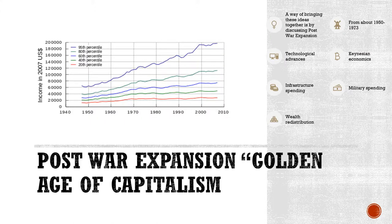While Keynesian economists believed there would be a downturn directly after the war, something called post-war expansion actually happened between about 1950 and 1973 — also called the golden age of capitalism — in which people of all income levels started to see their wealth and income grow. A lot of reasons for this include not just infrastructure spending, wealth redistribution, and technological advances pushing outside the production possibilities frontier, but also Keynesian economics themselves, as governments learned to adopt some of those policies — like Social Security — and continue using them even after the war and Great Depression had ended. So while they had predicted a huge economic downturn, the actual opposite happened in the next couple of decades.